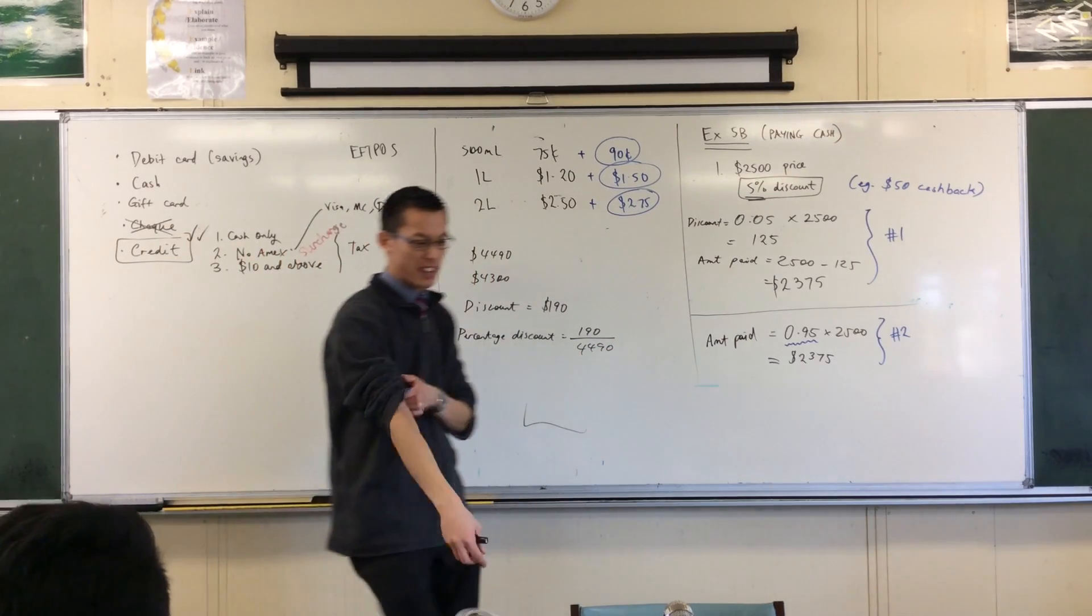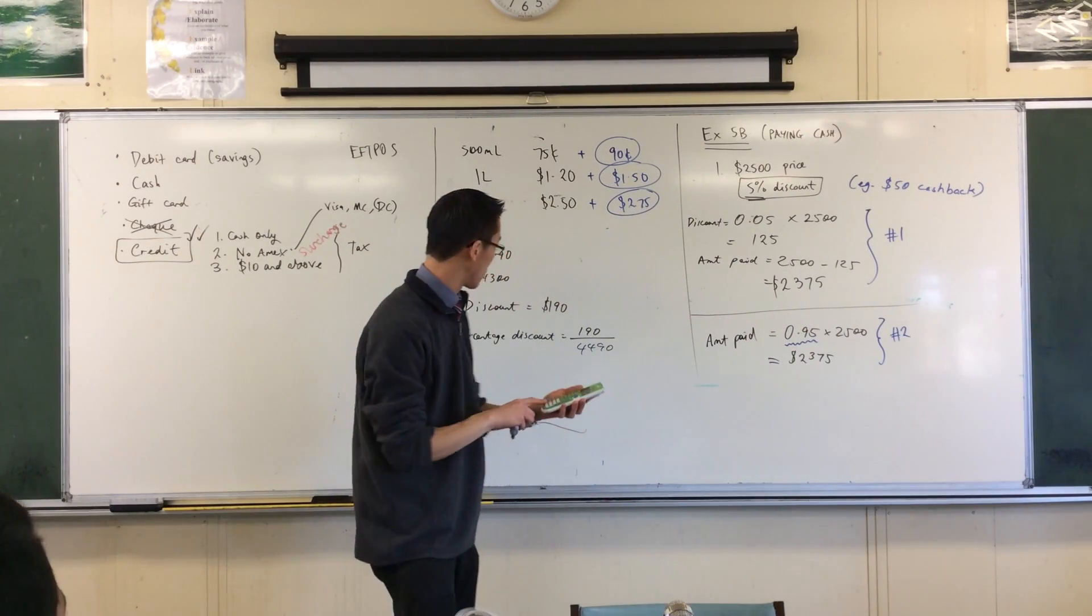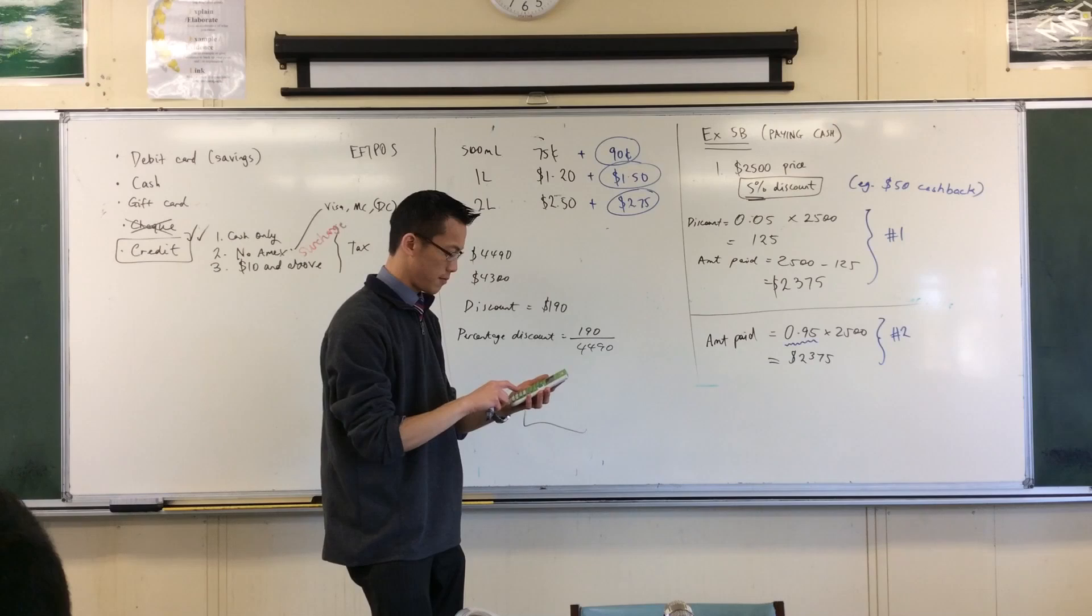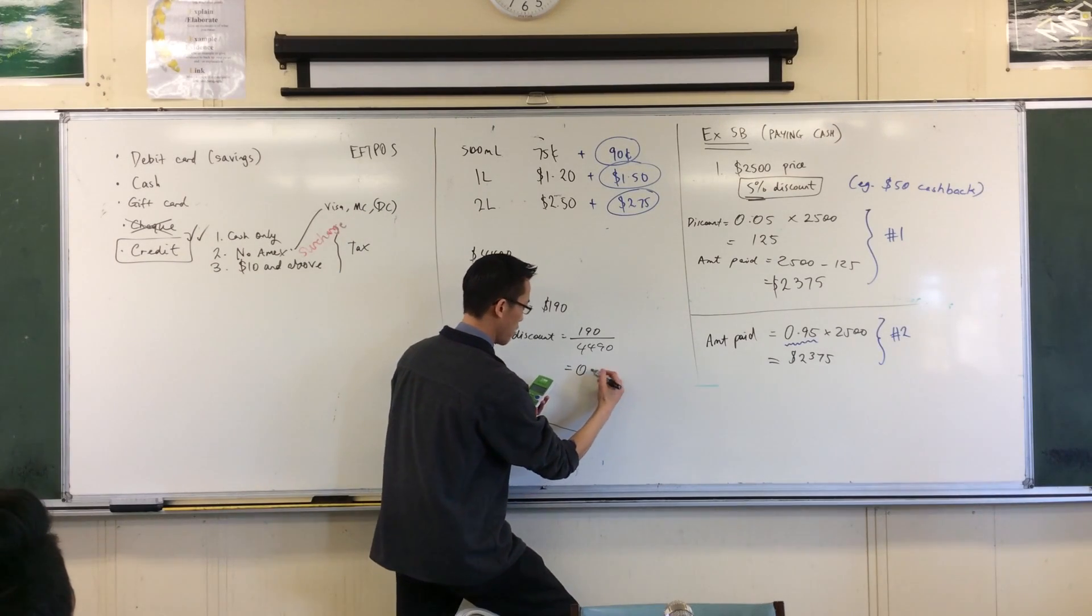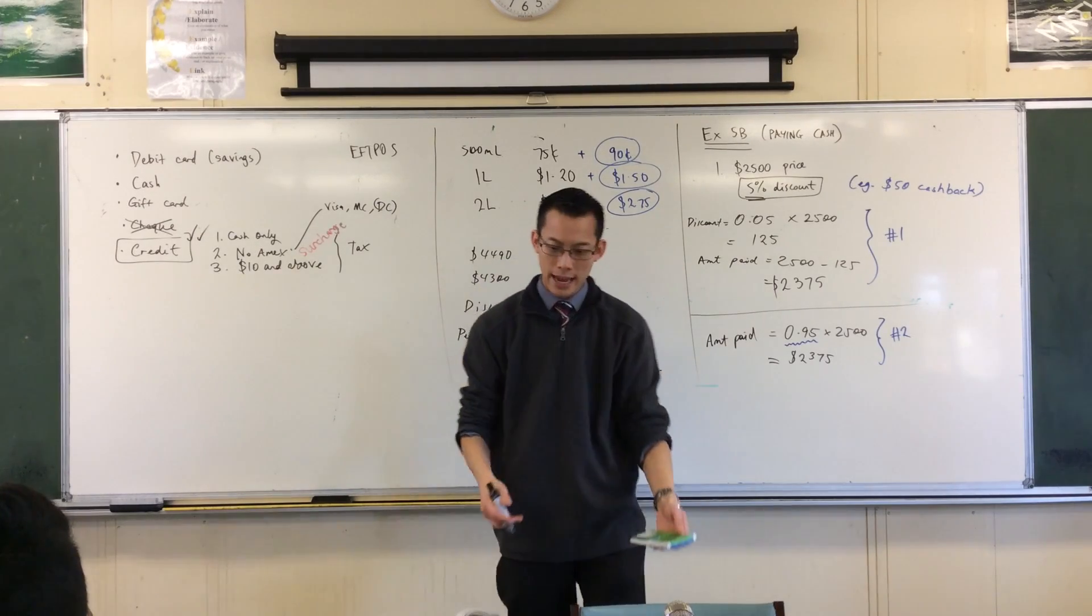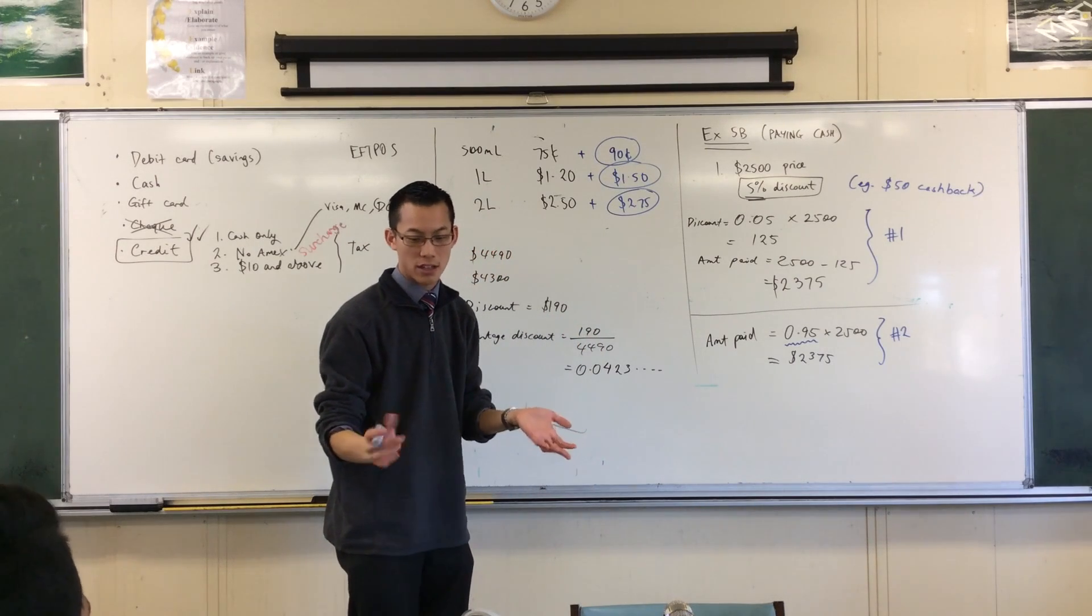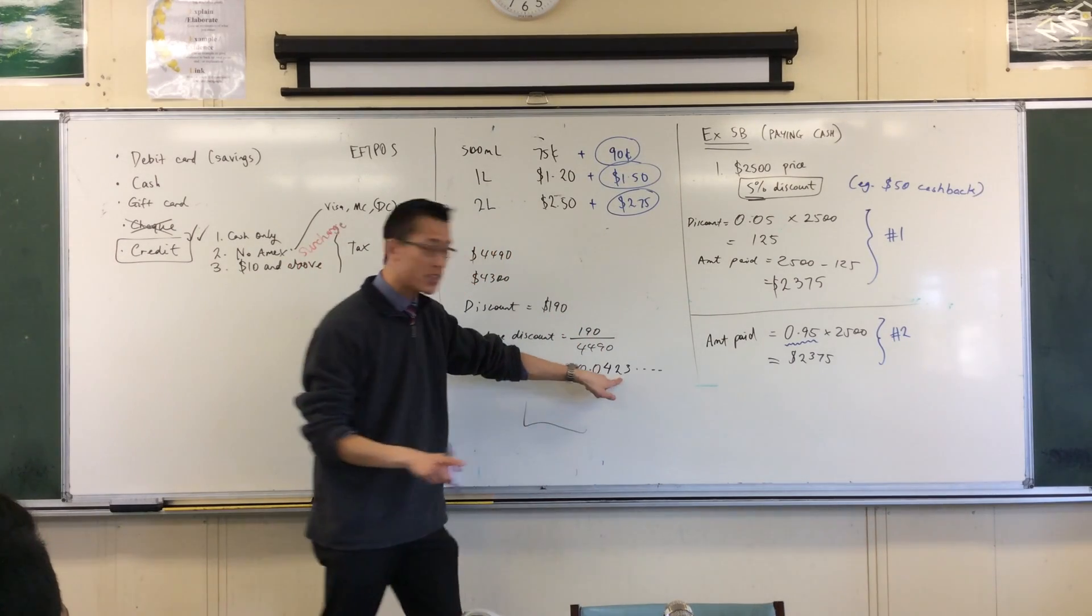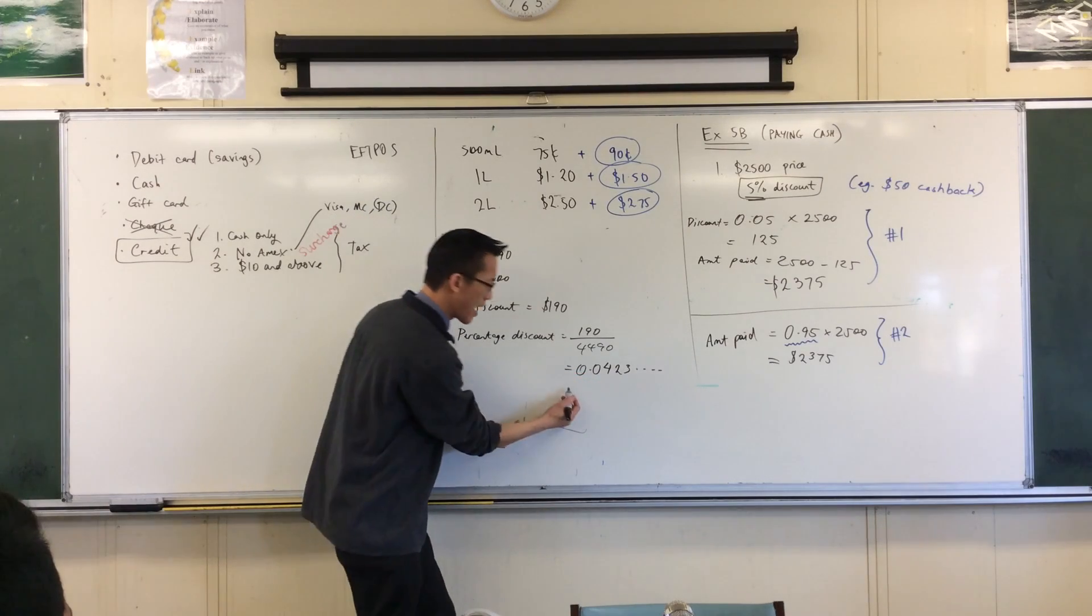Now, let's actually get our calculators out and do that. Because we'll get a decimal. And I think they want it to one decimal place. Which is 0.04. So, I've got 0.0423 blah, blah, blah, blah. Now, read carefully. They say, find the percentage discount correct to one decimal place. This is not a percentage. It's a decimal. Right?